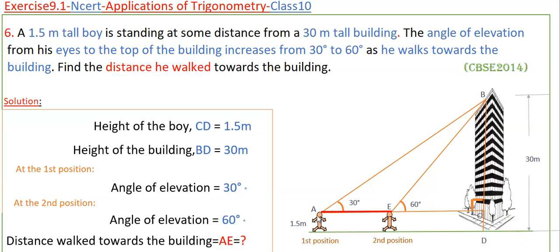The height of the boy is given as 1.5 meters. In this figure the height of the boy is CD — this is C and this is D. CD is equal to 1.5 meters, and the height of the building is also given as 30 meters. The height of the building is BD, that is 30 meters. As he walks from the first position to the second position, the angle of elevation changes from 30 degrees to 60 degrees.